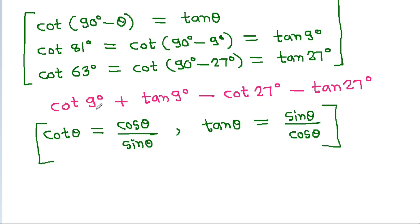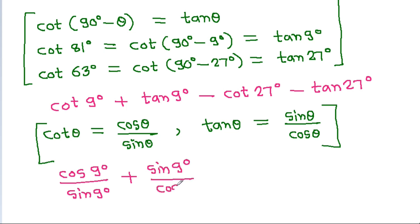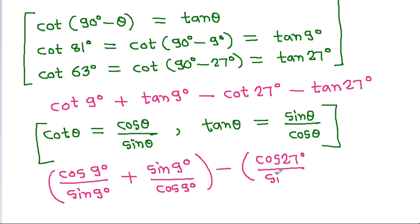So, cot 9° becomes cos 9° by sin 9°, and tan 9° becomes sin 9° by cos 9°. Taking minus common, cot 27° becomes cos 27° by sin 27°, and tan 27° becomes sin 27° by cos 27°.